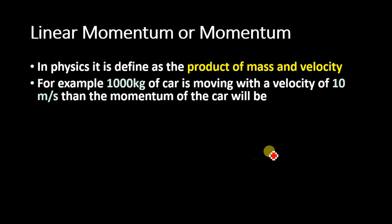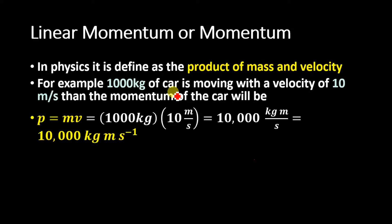For example, if we have a 1000 kg car moving with a velocity of 10 m per second, then the momentum of the car will be p equals mv, where p is the momentum, m is the mass, and v is the velocity of the car.